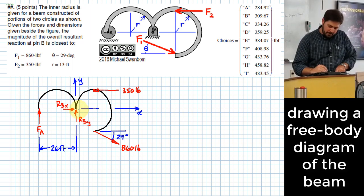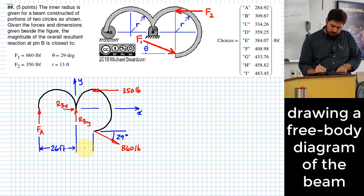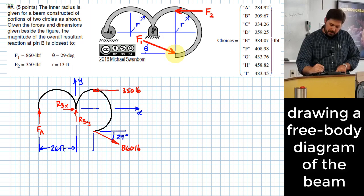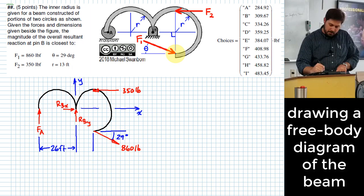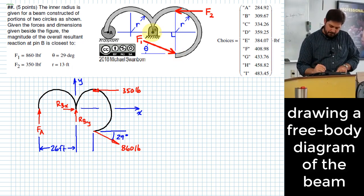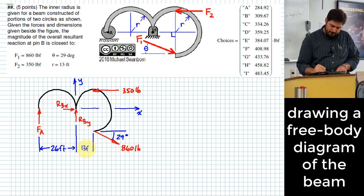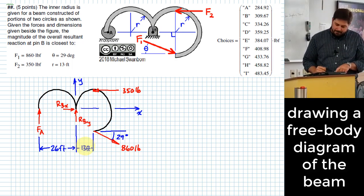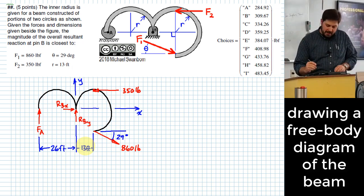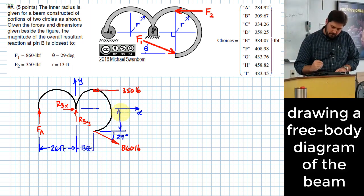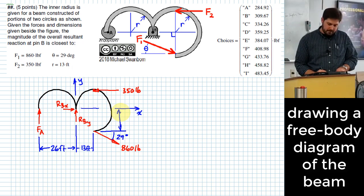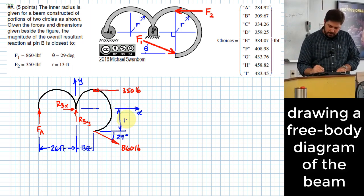Now, how far is it from the point I'm summing moments around to this point? Well, it looks here like this is a 90-degree angle right here, so this point right here is going to be one radius to the right of point B. How about the height, like this length right here? That should also be one radius, right? So this will be 13 feet.